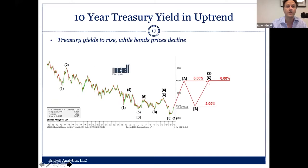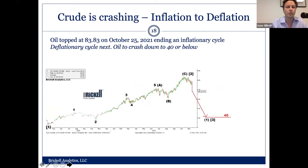Our target on yields is anywhere between 4% and 6%. Rising treasury yields to very high levels should be bearish for equity markets. So at some point, yields and equities should stop converging — there should be a divergence. These two markets are correlated. Crude oil topped in October at 84, and we believe that's the end of the so-called inflationary wave. There should be a deflationary wave next, and crude should go down about 50% from the 80 level.